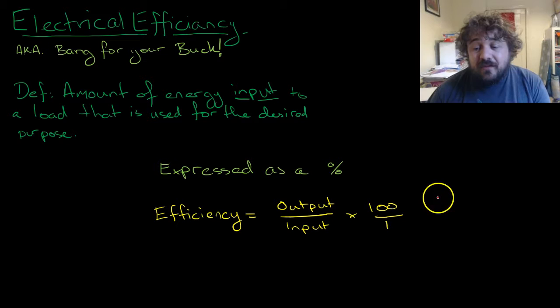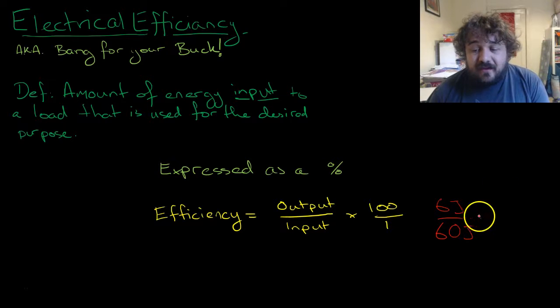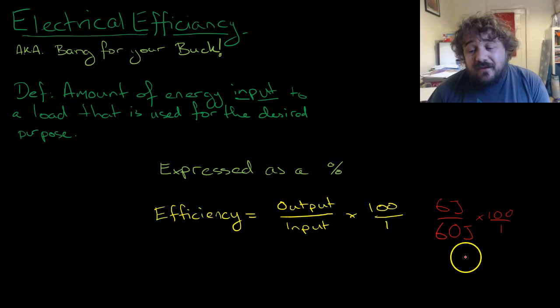If we've got something that puts out, say, 6 joules of energy, and into it went 60 joules of energy, that means it was, times 100, roughly 10% efficient.